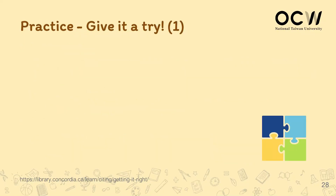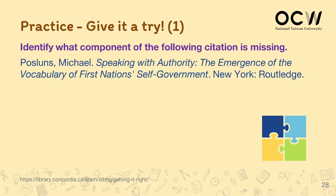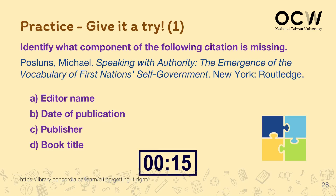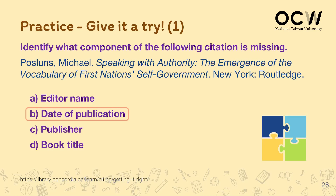Now that we're done with the three major types of information citations, let's put what you've learned into a small challenge. Look at the following citation — among the four options: editor name, date of publication, publisher, and book title — what do you see is missing? You guessed it right! It is option B, the date of publication, that is missing. Good job!